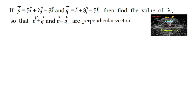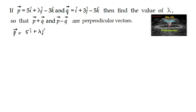If p is equal to 5i plus λj minus 3k and q is equal to i plus 3j minus 5k, then find the value of λ so that p plus q and p minus q are perpendicular vectors. Given vectors: p = 5i + λj - 3k and q = i + 3j - 5k.